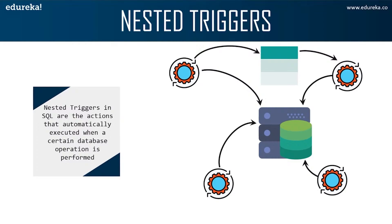You might be wondering in which scenario we can use a nested trigger. Continuing from the earlier scenario, Anna sends an email for every new customer added to the database. Now, what if she wishes to keep track of the number of customers to whom the email was sent? Anna needs to create a nested trigger to keep track of the count along with sending an email. So that was all about the syntax of triggers.